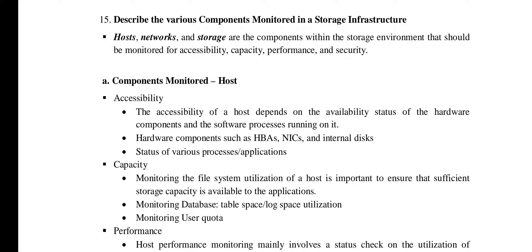The first component monitored is the host. For the accessibility parameter, the accessibility of a host depends on the availability and status of the hardware components and the software processes. The hardware components include HBAs (host bus adapters), NICs, etc., and various processes on the software side.